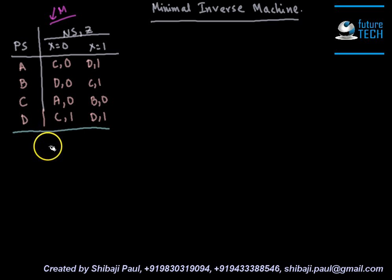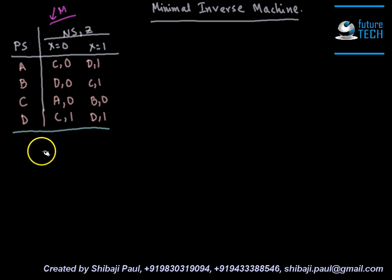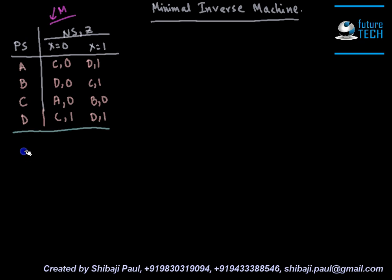In order to build the minimal inverse machine, first we need to find out the triplets corresponding to the states of the minimal inverse machine from the given machine. A triplet contains three elements: the first one is the state information, and the other two are the outputs from the two given inputs in the sequence for that state.